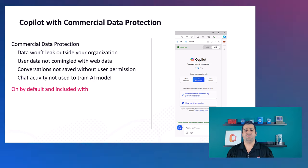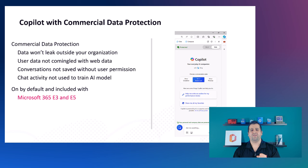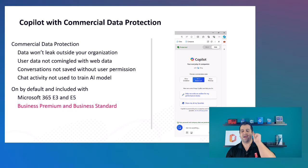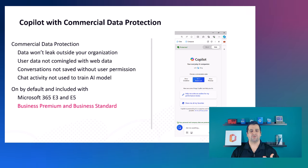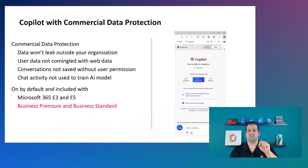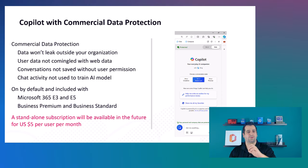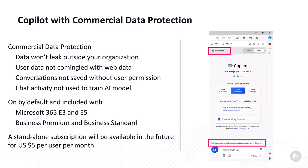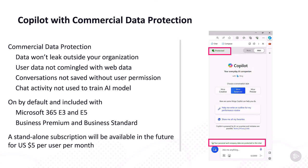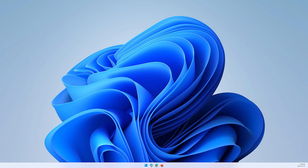This is on by default and it's included with Microsoft 365 E3 and E5 subscriptions, as well as Business Premium and Business Standard subscriptions. If you do not have those subscriptions — for example, if you have only an Office 365 E3 or E5 — there will be a standalone subscription available in the future for five dollars per user per month, if you are logged in with an eligible Entra ID account.